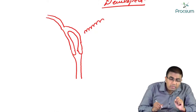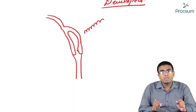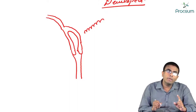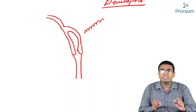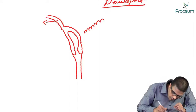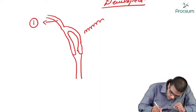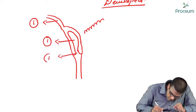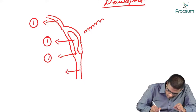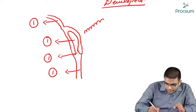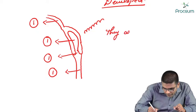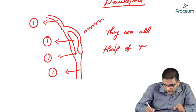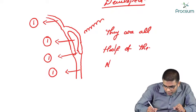Important exam points about unicornuate uterus: In unicornuate uterus there is one fallopian tube, one uterus, one cervix, and one vagina — but they are all half of normal.